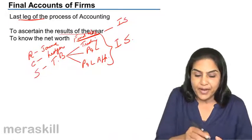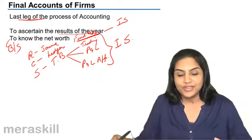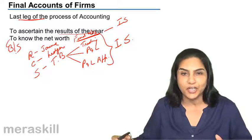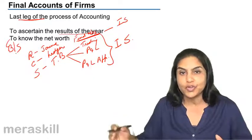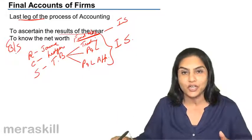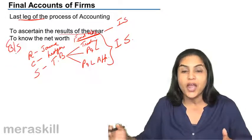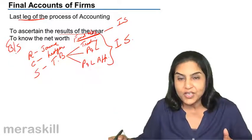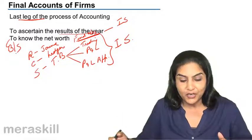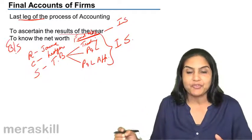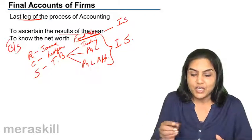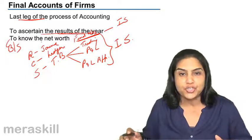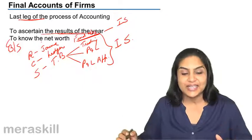Another statement which is prepared is the balance sheet, which is to know the net worth of the business. The balance sheet is prepared to know what are the assets and what are the liabilities on a particular date, as at the end of the year. The difference between what we own and what we owe will give us the capital or the net worth of the firm. The final aim of the financial statements is to ascertain the results for the year through the income statement and to know the financial position of the business on a particular date, that is as at the year end.